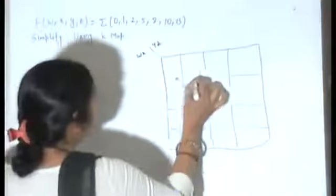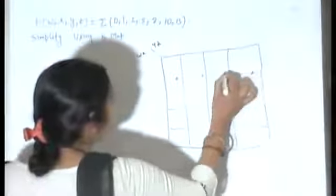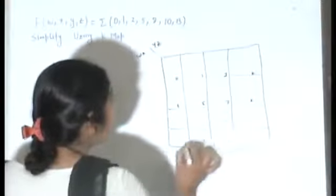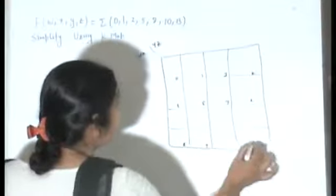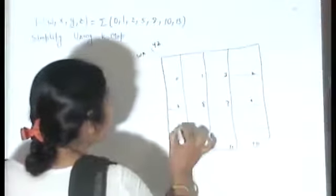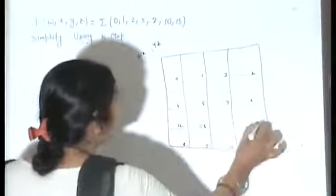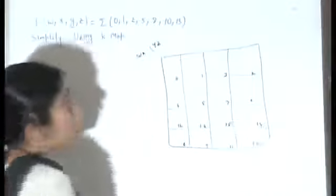So what will be numbering? 0, 1, 2 here, 3, then 4, 5, 6, 7, 8, 9, 10, 11, 12, 13, 14, 15. We have to practice at home.